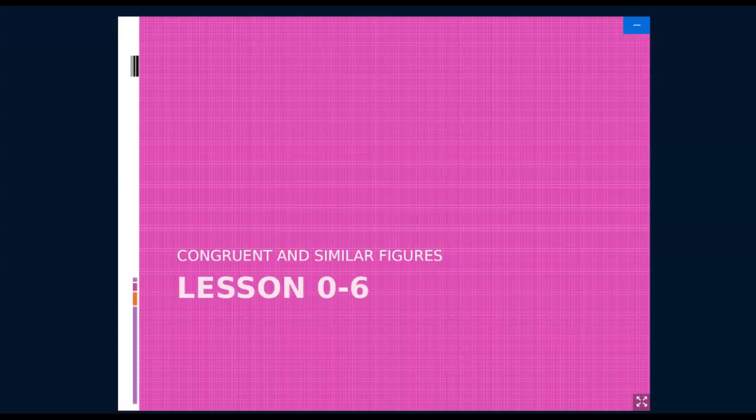Alright, so today we are looking at Lesson 0-6. This is a review of last year. We are going to look at congruent and similar figures. The reason we look at this topic to start the year is because it involves ratios, and ratios are an important part of being able to solve for a missing part of a problem. So we're going to look at cross multiplying skills and problem solving skills in this lesson.